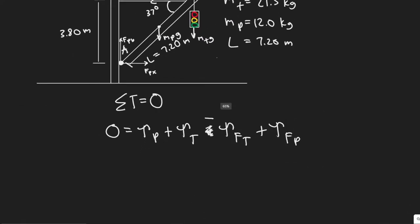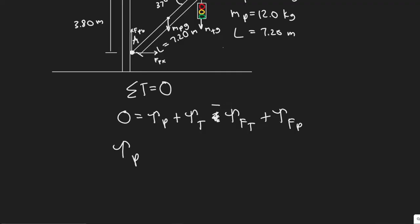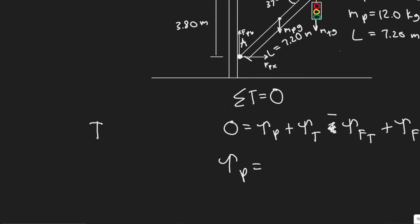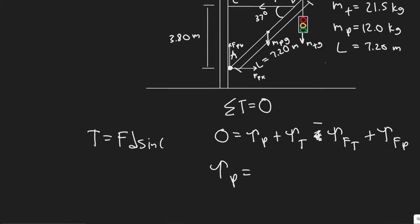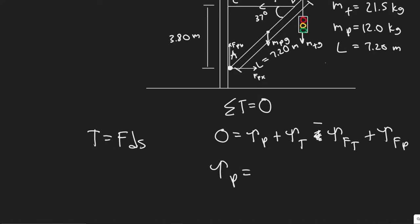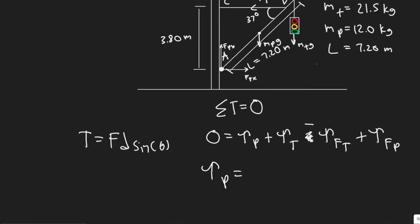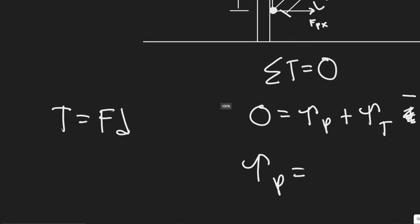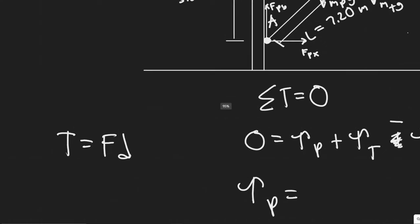Now let's solve for each torque, starting with the torque of the pole. You need to know the formula for torque: torque equals force times distance times the sine of theta. What I like to do is use the perpendicular distance directly, so it becomes simply force multiplied by the perpendicular distance to the point of rotation.